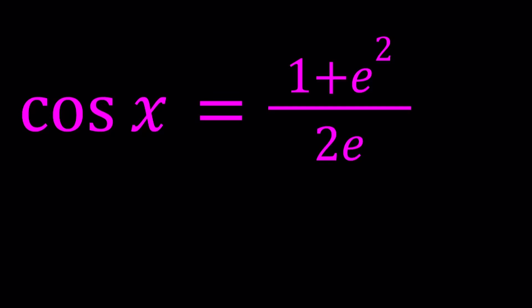Hello everyone. In this video we're going to be solving an interesting homemade trigonometric equation that involves Euler's number, e, which is about 2.7. We have cosine x equals 1 plus e squared divided by 2e, and we're going to be solving for x values.